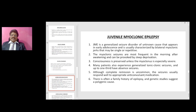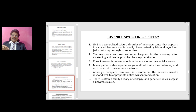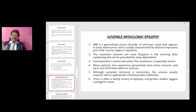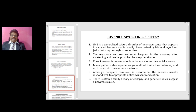Juvenile myoclonic epilepsy is a generalized seizure disorder of unknown cause that appears in early adolescence, characterized by bilateral myoclonic jerks that may be single or repetitive. The myoclonic seizures are most frequent in the morning after awakening and can be provoked by sleep deprivation. Consciousness is preserved unless the myoclonus is especially severe. Many patients also experience generalized tonic-clonic seizures, and up to one-third have absence seizures. The seizures usually respond well to appropriate anticonvulsant medication, and there is often a family history of epilepsy suggesting a polygenic cause.